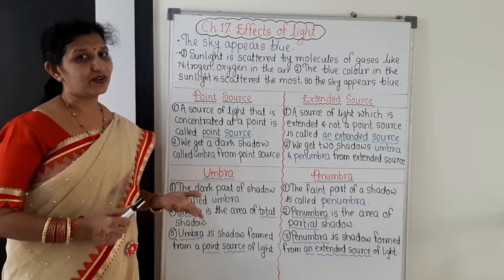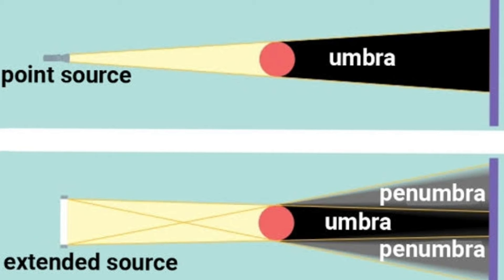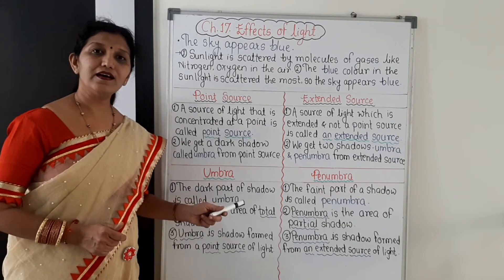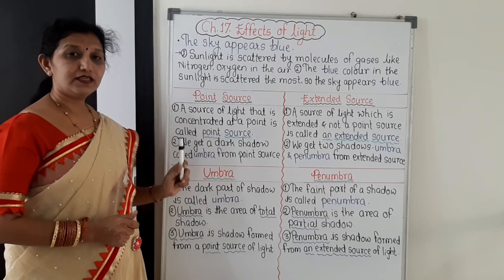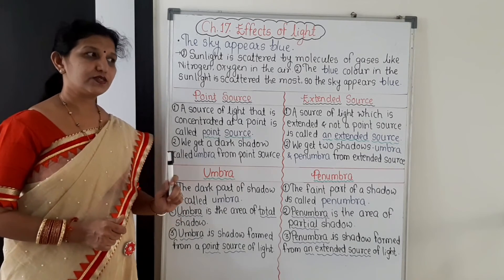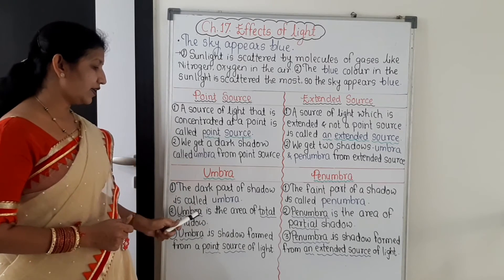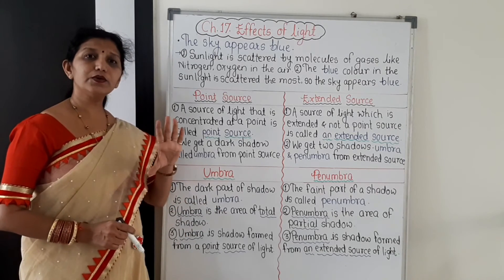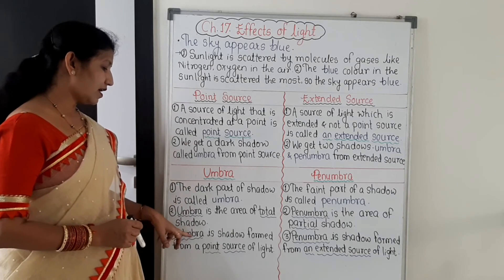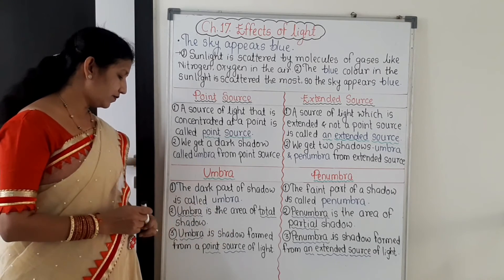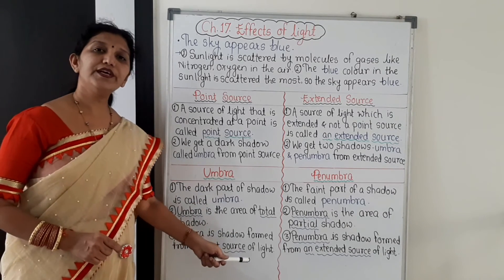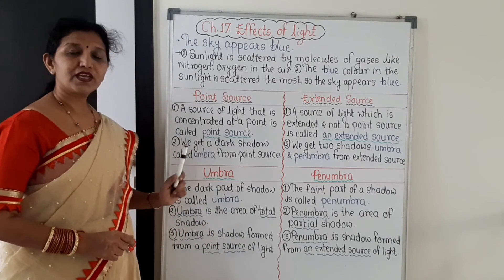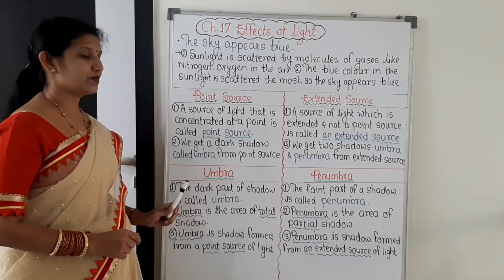Let us see what is umbra and what is penumbra. The dark part of a shadow is called umbra. Umbra is the area of total shadow. It is the shadow formed from a point source of light, as we have just discussed.